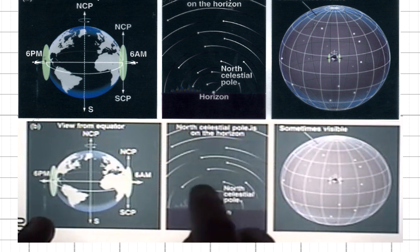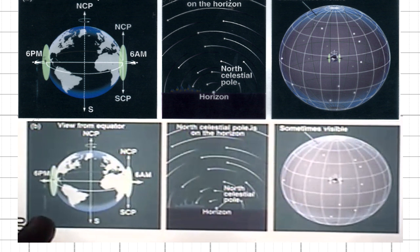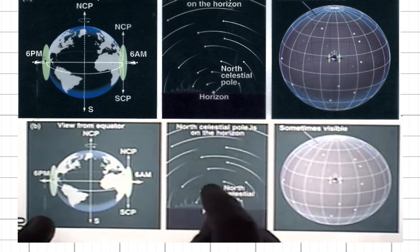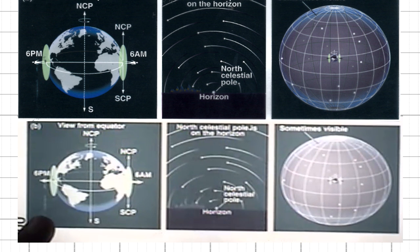Since all the stars revolve around the celestial poles, they will be moving along circles parallel to the celestial equator.